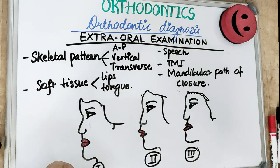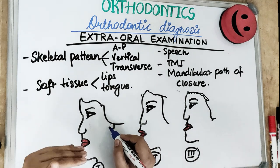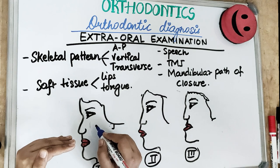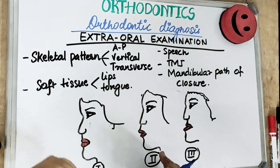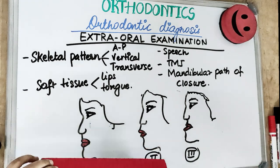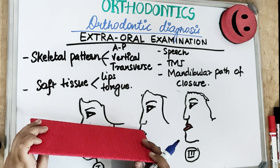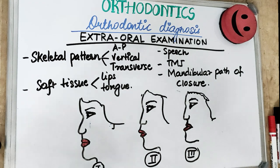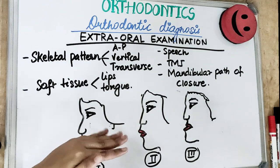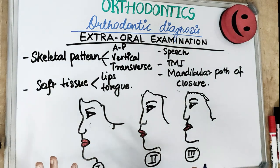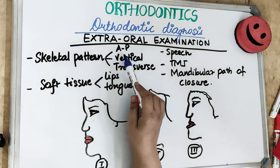Before starting extra-oral examination, the seating position of the patient is very important. The patient should be seated upright and the head should not rest on the headrest — the patient should take the weight of his own head. The FH plane, which runs from the upper border of the external auditory meatus to the inner aspect of the bony orbit, should be parallel to the floor. The lips should be in repose and teeth in centric occlusion before you begin.